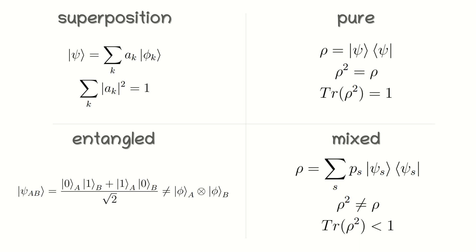A mixed state cannot be described with a single ket vector. It is a statistical ensemble of pure states, and represents a quantum system with incomplete knowledge or uncertainty about its state. If you have a collection of quantum systems, each in a pure state with a certain probability, the overall state of the ensemble is a mixed state. A mixed state can always be represented by a density matrix. The criterion to decide whether the state is mixed or pure is the trace of the squared density matrix. For a pure state, the squared density matrix equals the density matrix itself, and its trace equals 1. For a mixed state, the squared density matrix is not equal to the density matrix, and the trace of the squared density matrix is less than 1.